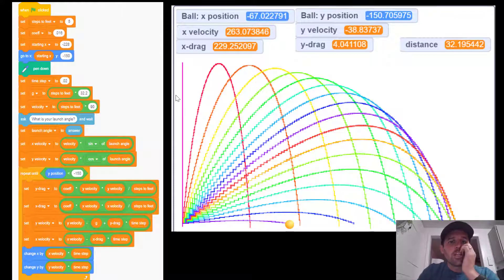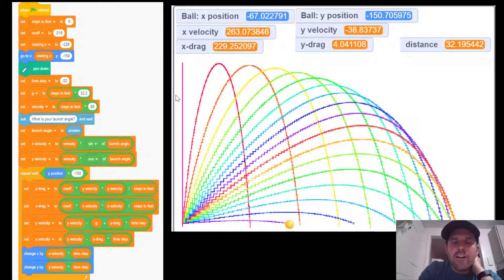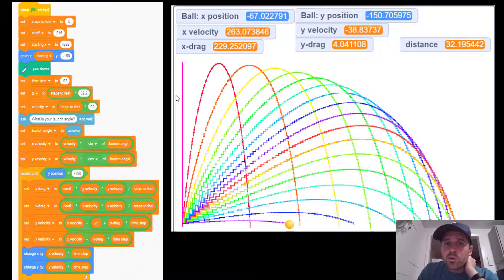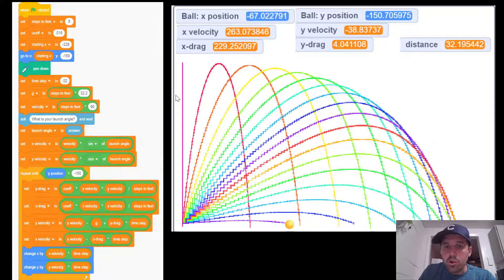So as a result of this code we were able to change the launch angle and launch a projectile. Our computer code would predict how far the ball was going to go. So these are different trajectories. When we're changing the launch angle we could predict things like the velocity and distance to see how far the ball would go.